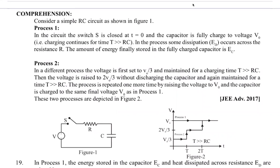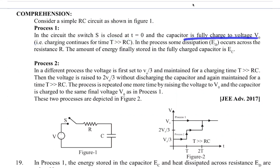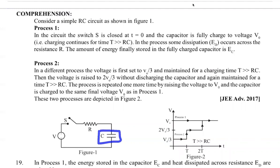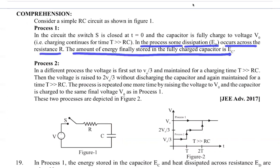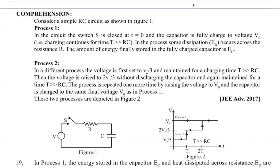The next question is based on a comprehension about a simple RC circuit shown in figure one. The switch is closed at t equal to zero and the capacitor is fully charged to voltage V_not. The charging continues for a long time (t >> RC). In Process 1, some energy dissipation occurs across the resistance R. The energy finally stored in the fully charged capacitor is E_s, and the energy dissipated is E_d.